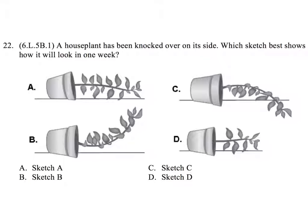Question 22. A houseplant has been knocked over on its side. Which sketch best shows how it will look in one week? A. Sketch A. B. Sketch B. C. Sketch C. D. Sketch D.